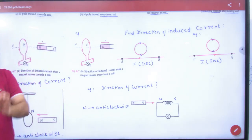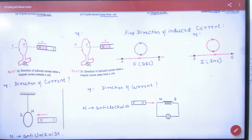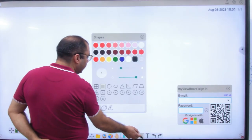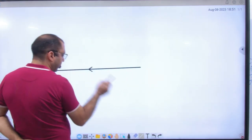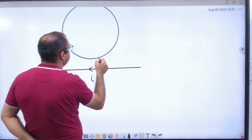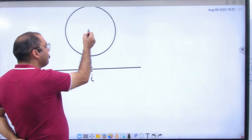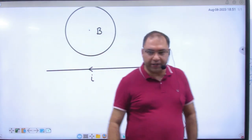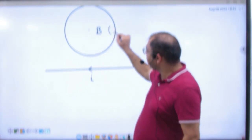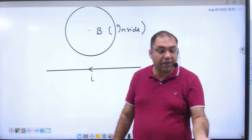Now, if you have a current carrying wire with a loop — using the right-hand rule (thumb along current direction), B is directed inside the loop. So B is inside. Current is constant — B from this coil is constant, as we have done in the last chapter. If I increase the current here, then B here will increase.